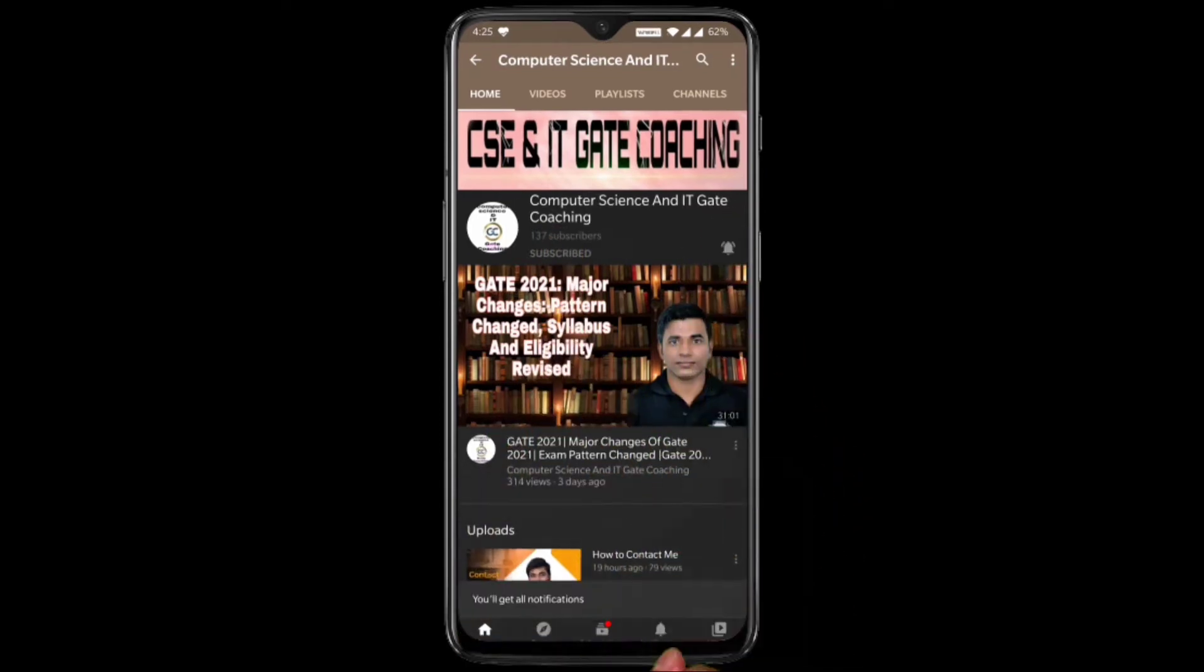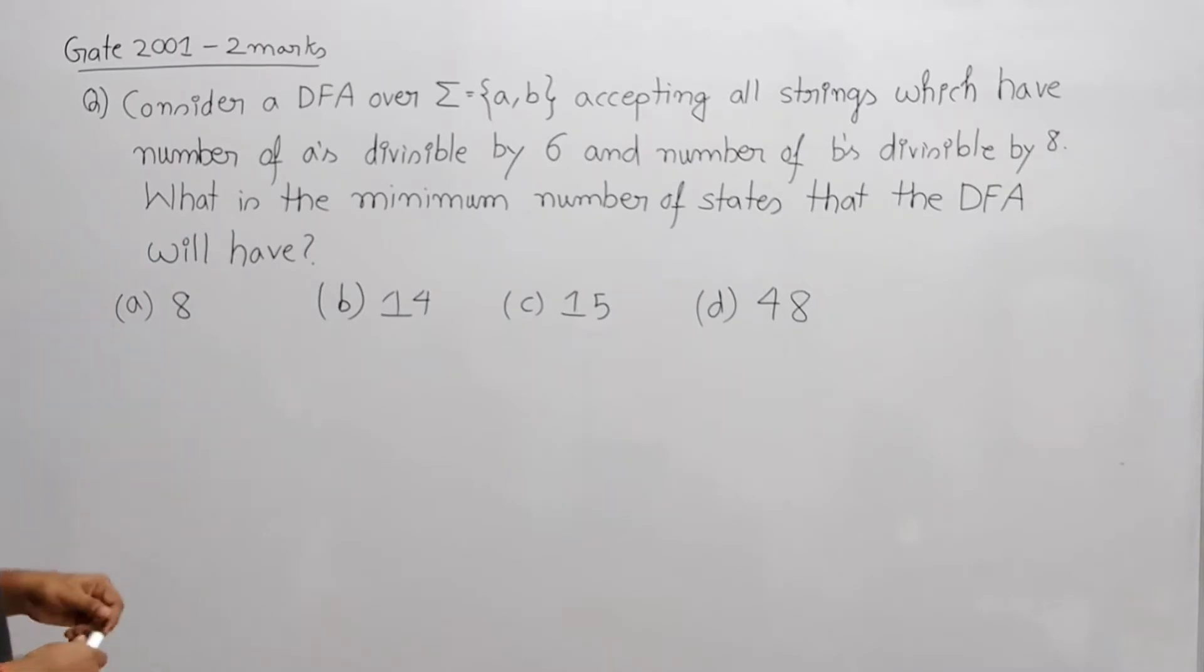Now see GATE 2001 question worth two marks. Consider a DFA over Σ = {a, b} accepting all strings which have number of a